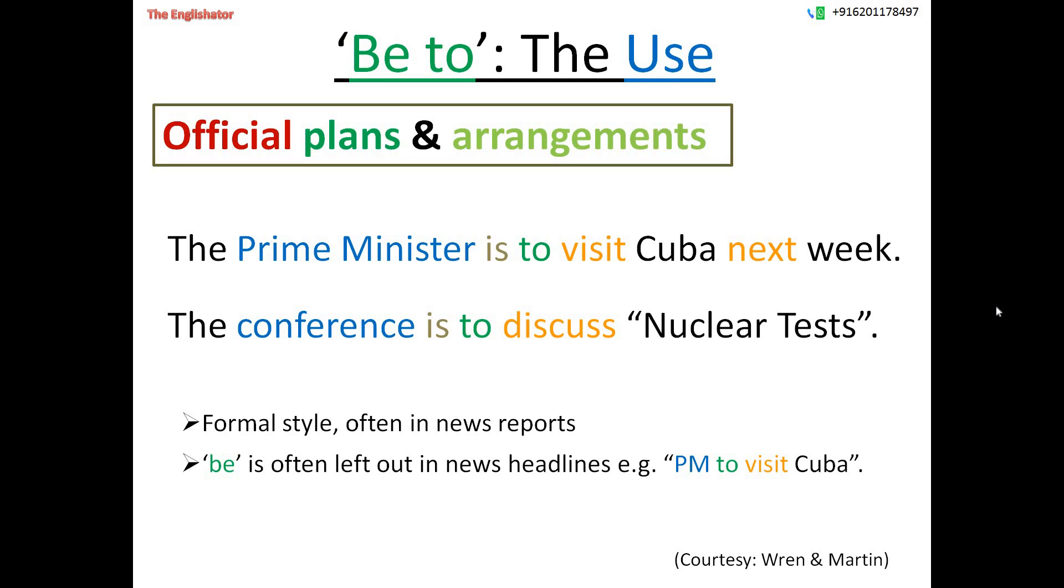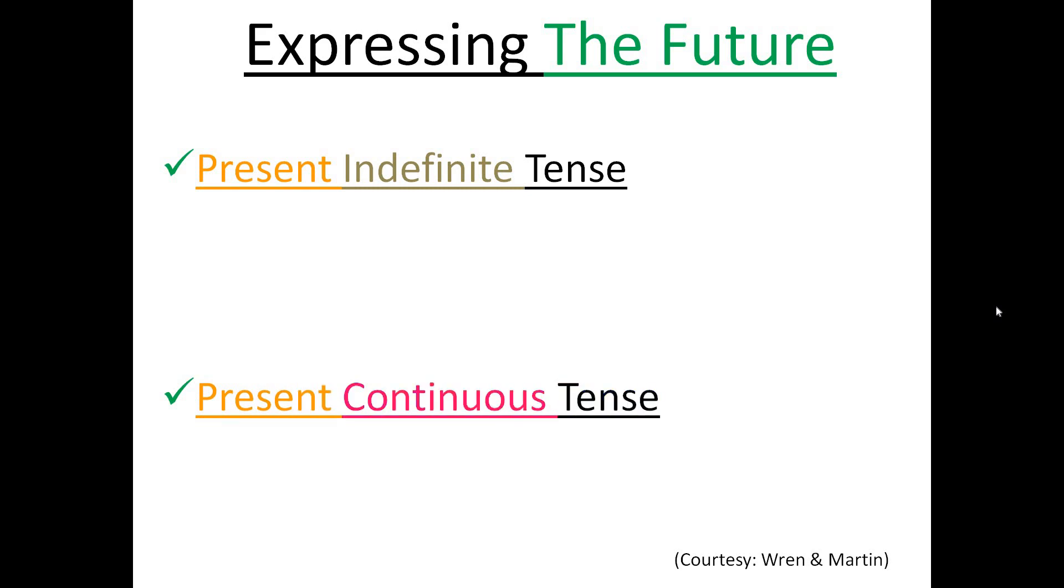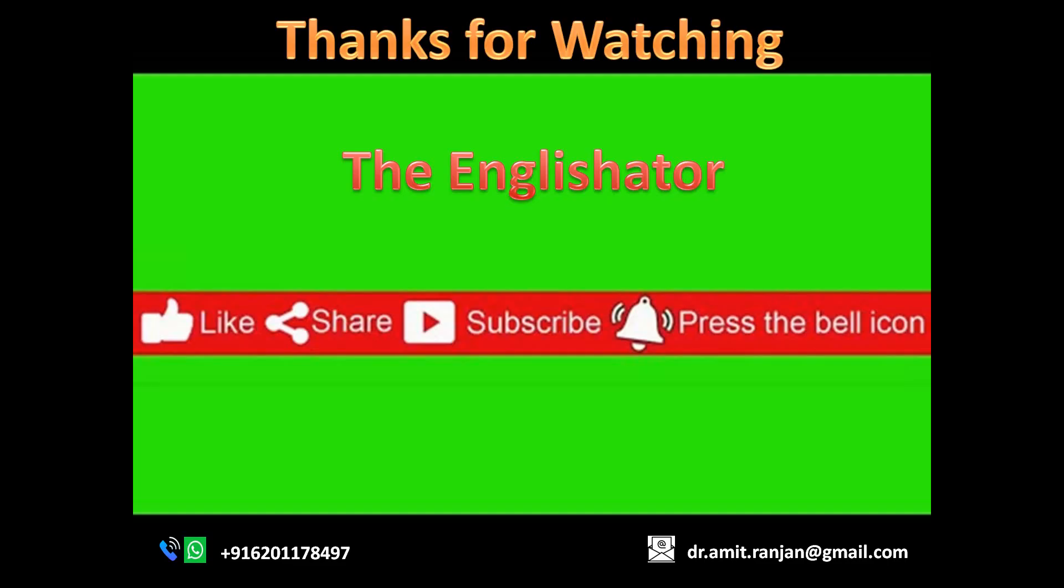So these are the chief uses of the phrases be about to and be to respectively. And before I end, let's remember that even the present indefinite tense and the present continuous tense are also used to express certain future actions or events. And I have discussed in detail their usage in the respective videos. You can find the link of those videos in the description box below or up here as I button. I recommend that you watch those videos because these are also important in expressing the future. So this is all from my side for today.